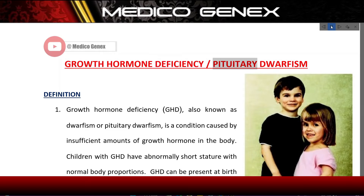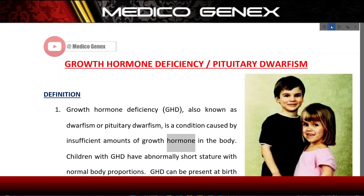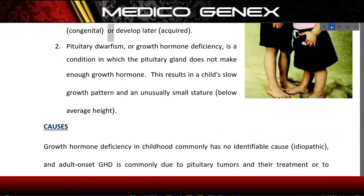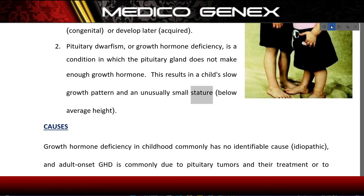Growth hormone deficiency (GHD), also known as dwarfism or pituitary dwarfism, is a condition caused by insufficient amounts of growth hormone in the body. Children with GHD have abnormally short stature with normal body proportions. GHD can be present at birth (congenital) or develop later (acquired). It is a condition in which the pituitary gland does not make enough growth hormone, resulting in a child's slow growth pattern and an unusually small stature below average height.